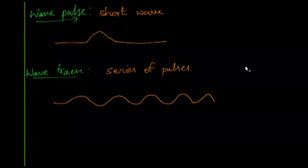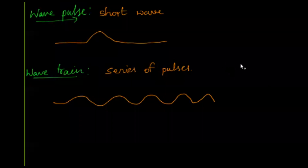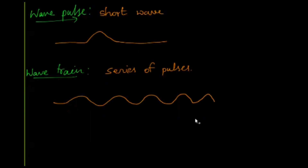The next classification is wave pulse versus wave train. A wave pulse is a very short wave produced due to excitation for a very small interval of time. The produced disturbance looks like a small part of a wave. The wave pulse moves along the length of a string or rope. Before the pulse arrives, particles are exactly at rest; as it comes, they gain velocity, move, and then return to rest once the pulse passes through them.